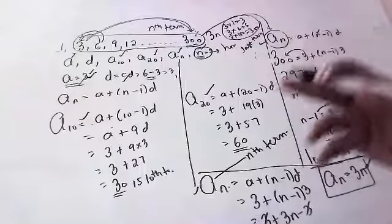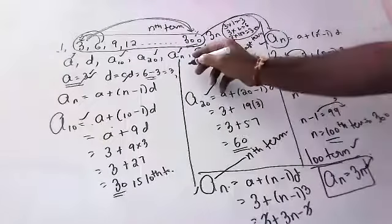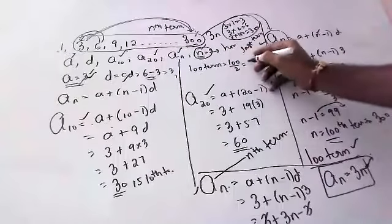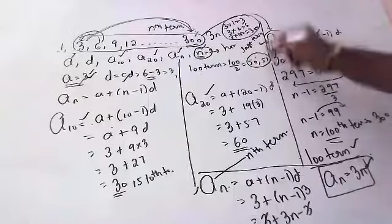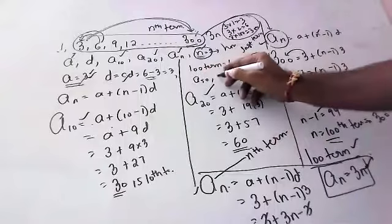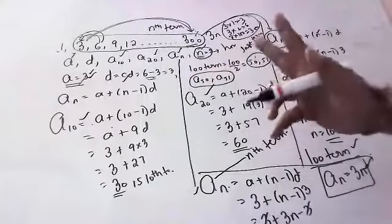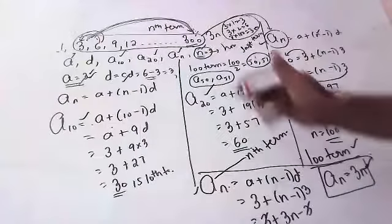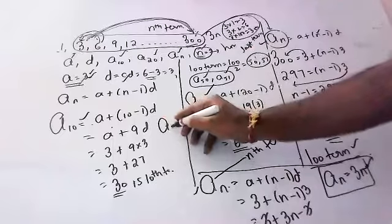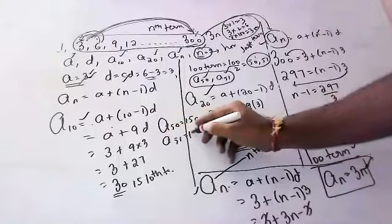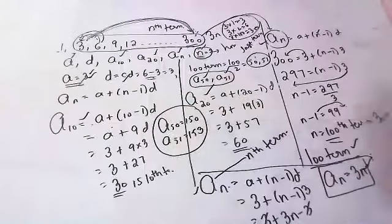The middle term — since there are 100 terms, 100 ÷ 2 = 50, so the 50th and 51st terms are the middle terms. There are two middle terms. a50 = 3 × 50 = 150, and a51 = 3 × 51 = 153. These are the two middle terms. When the total number of terms is even, there are always two middle terms.